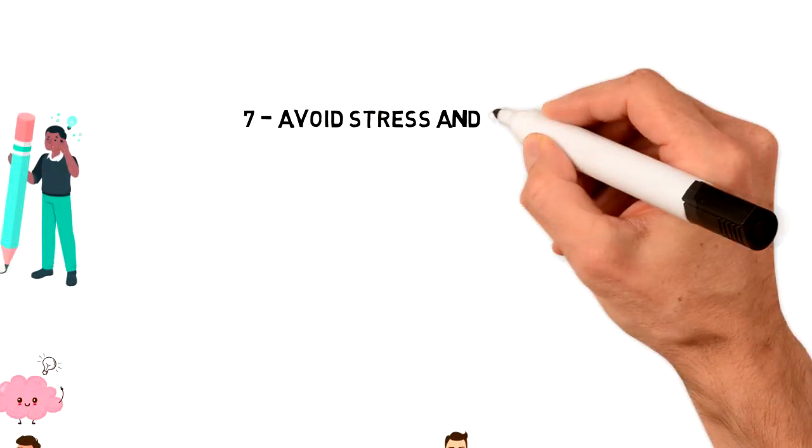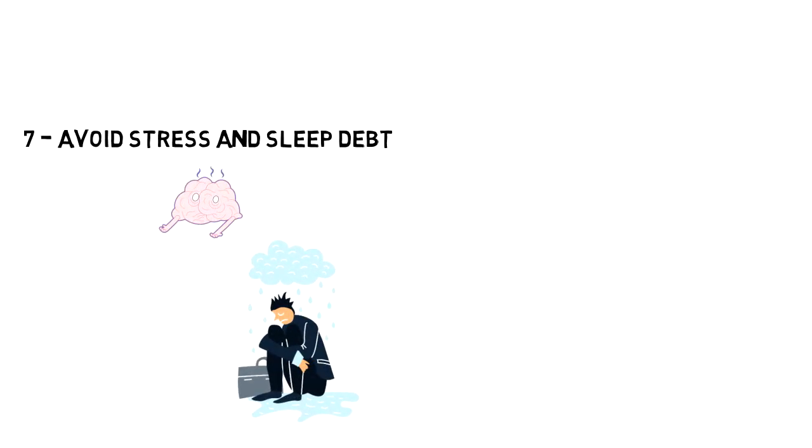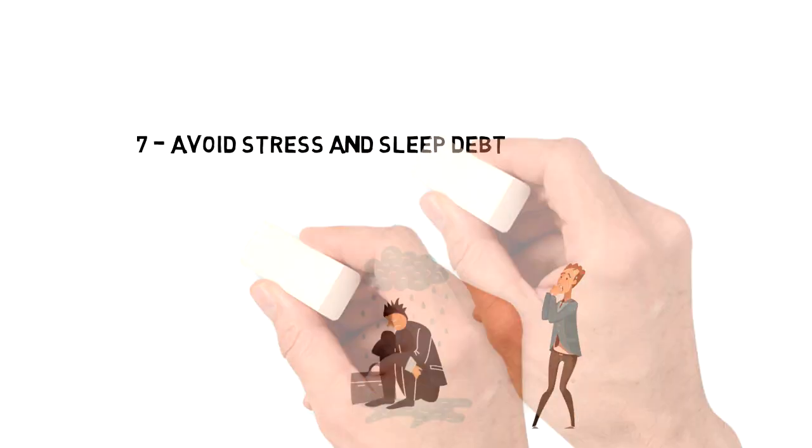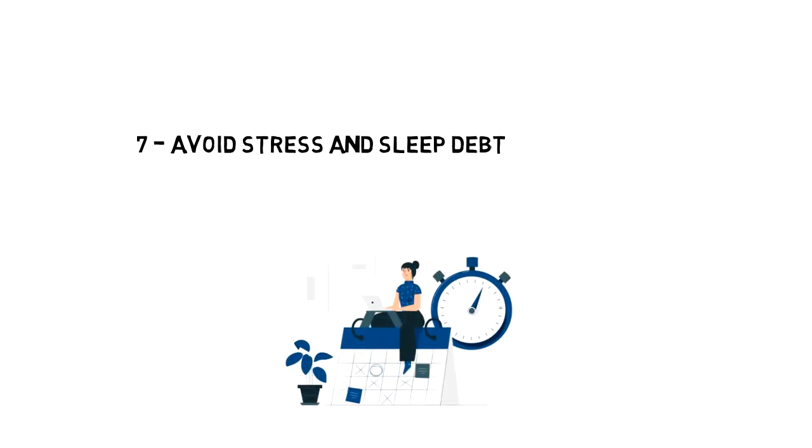Number seven: avoid stress and sleep debt. There are two things that you should avoid at all costs because they will have a negative impact on your brain function. First one is stress. While a little stress can help you to take action, too much stress will create worries and fear. The best way to avoid stress is to start planning your time. Have a weekly schedule in place so that you know what are your commitments.